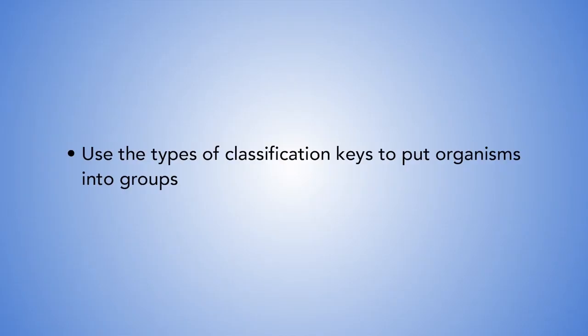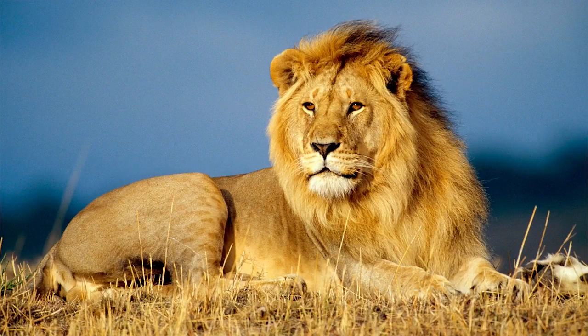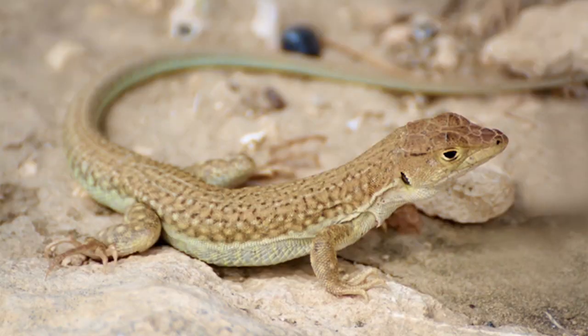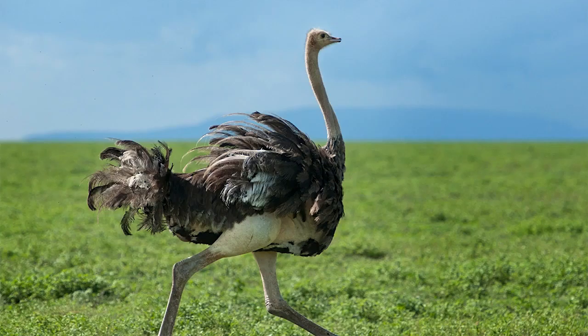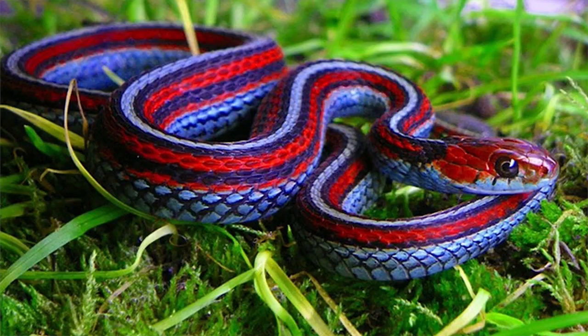By the end of today's lesson you should be able to use the types of classification keys to put organisms into groups. At our last meeting we looked at some organisms such as the lion, bat, lizard, fish, domestic fowl, ostrich, and snake. We shall begin with a dichotomous key, which is used to identify a few organisms in one exercise. Let us begin by grouping them using their external features.